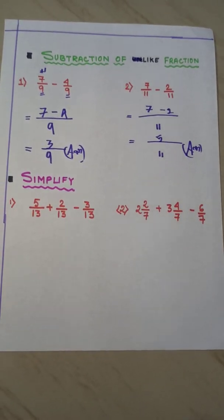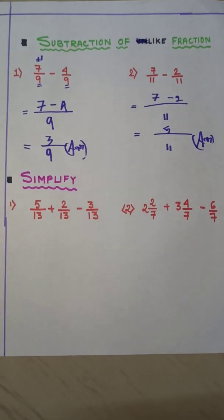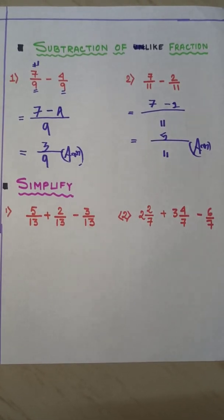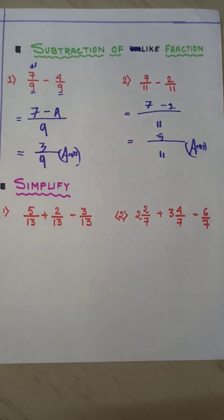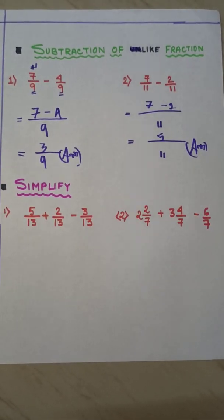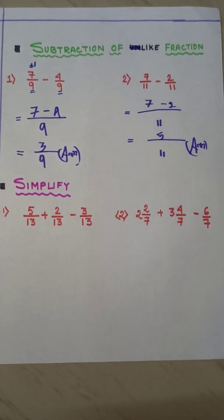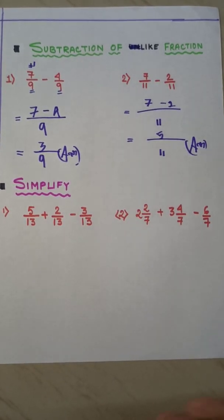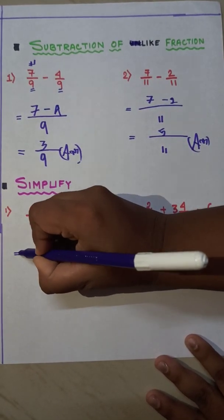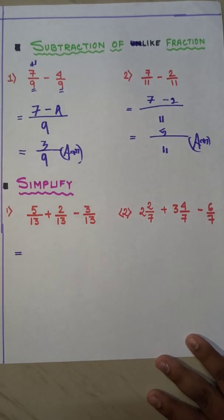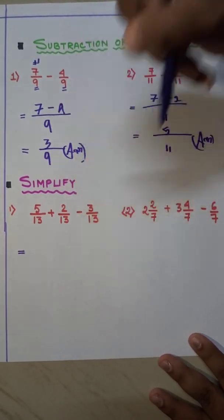I think addition and subtraction all of you have understood. Now comes a little bit difficult portion — that is simplification. In the simplification portion we will do addition and subtraction together. In the first one, all the fractions are like fractions because the denominators are the same.